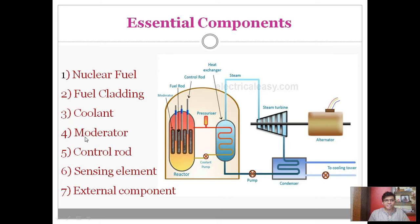The fourth component is the moderator. The role of the moderator is to slow down the fast-moving neutrons generated during the nuclear fission process. The control rod has the capacity to absorb neutrons. By absorbing neutrons, we can control nuclear reactions — whether to start or stop the nuclear reactor is controlled with the help of these control rods.